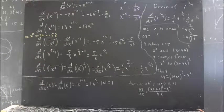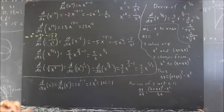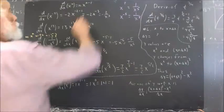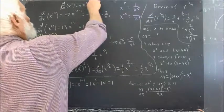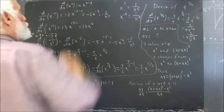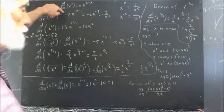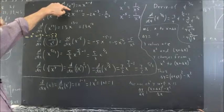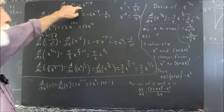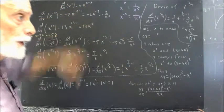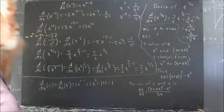I've written the rule for power functions. As you see here, the derivative with respect to x of x to the n equals nx to the n minus 1.